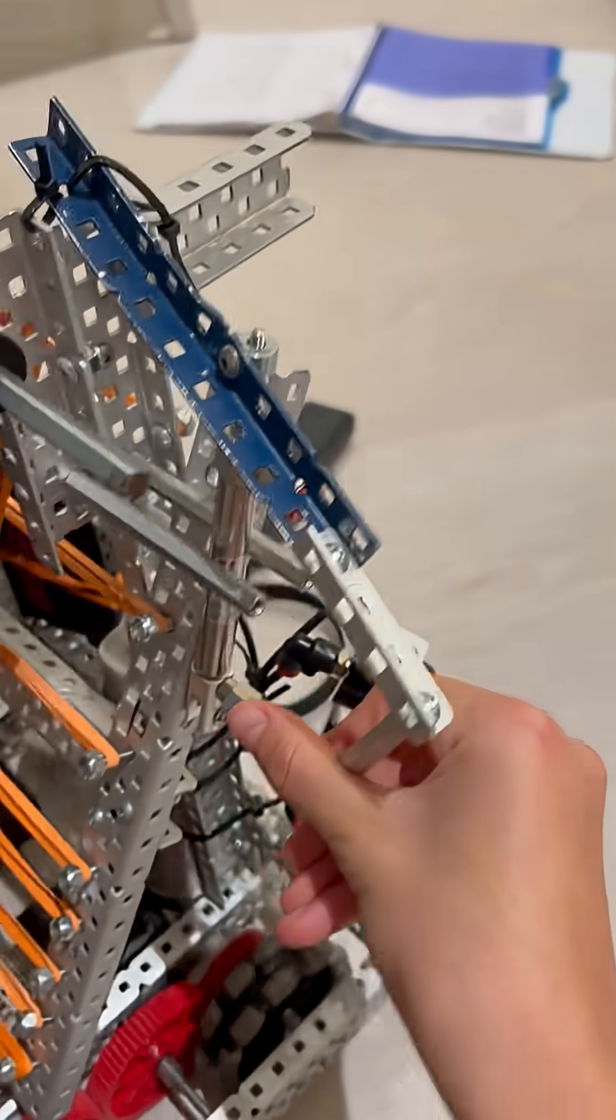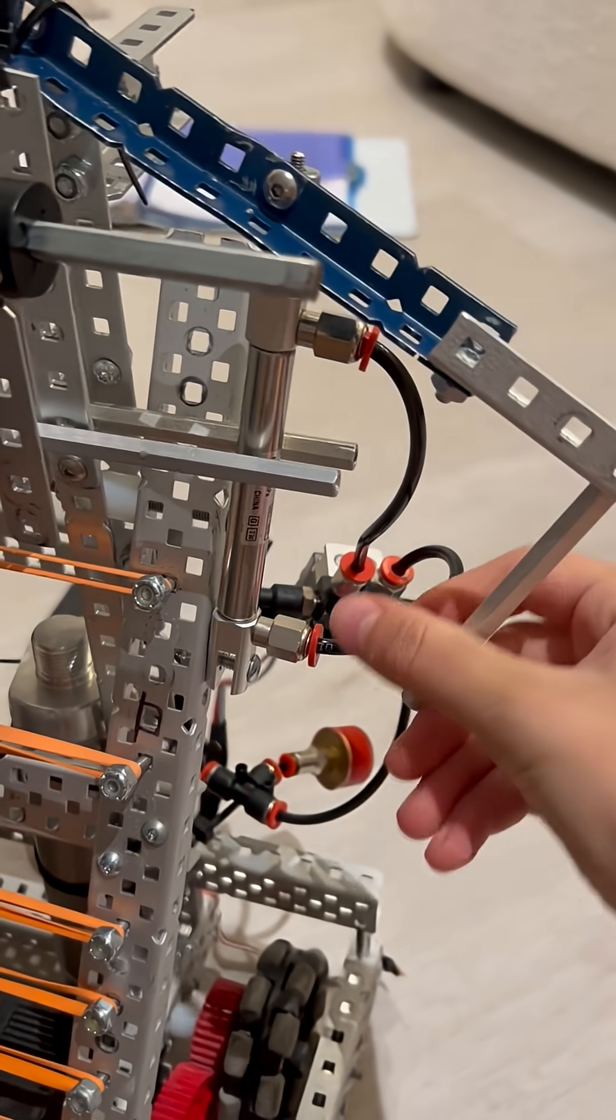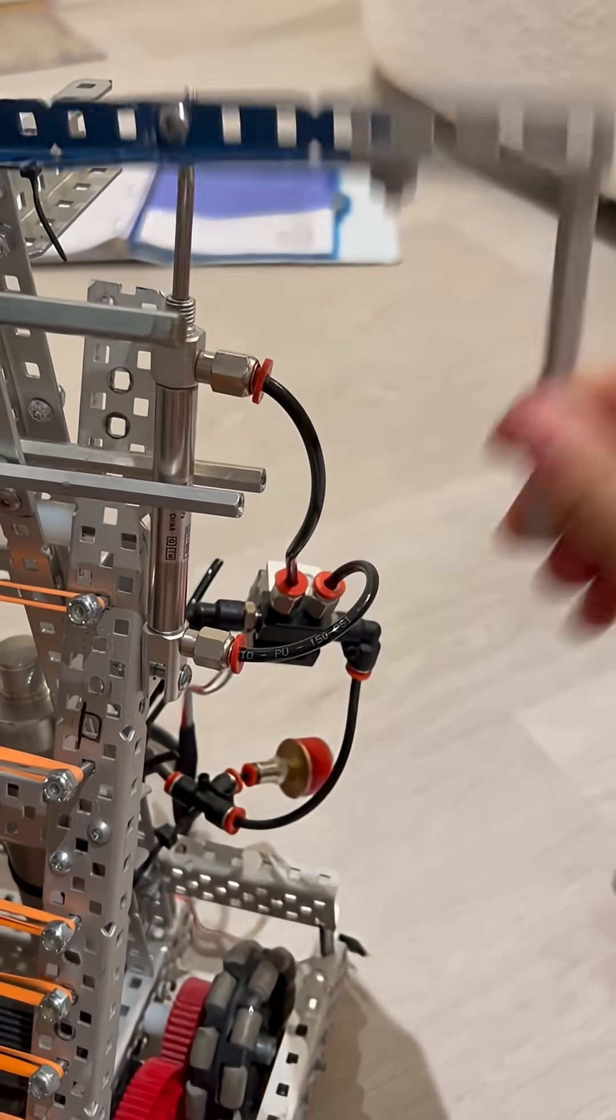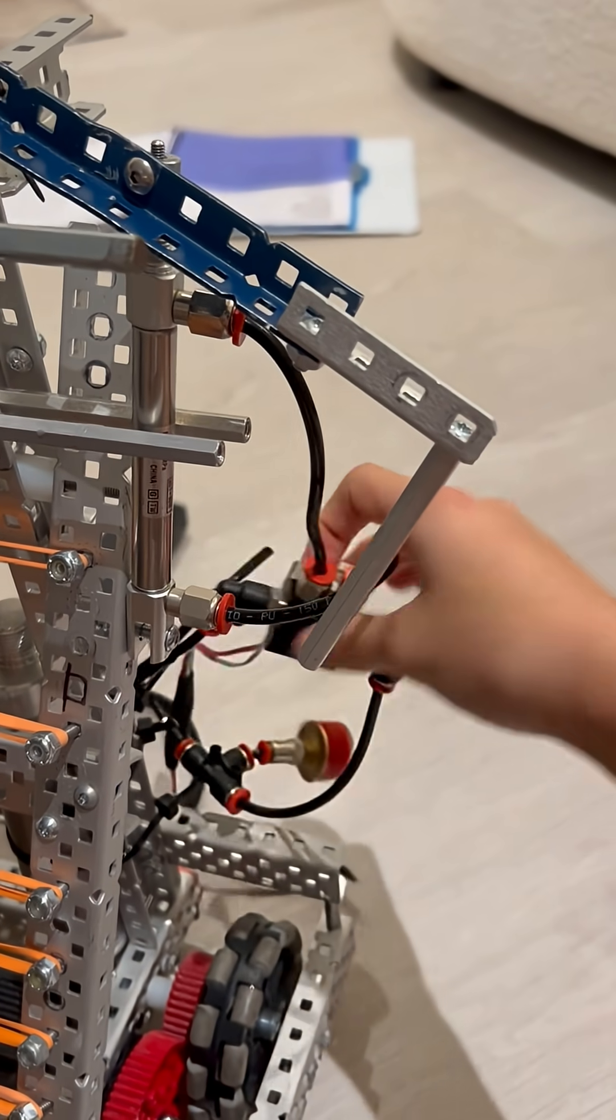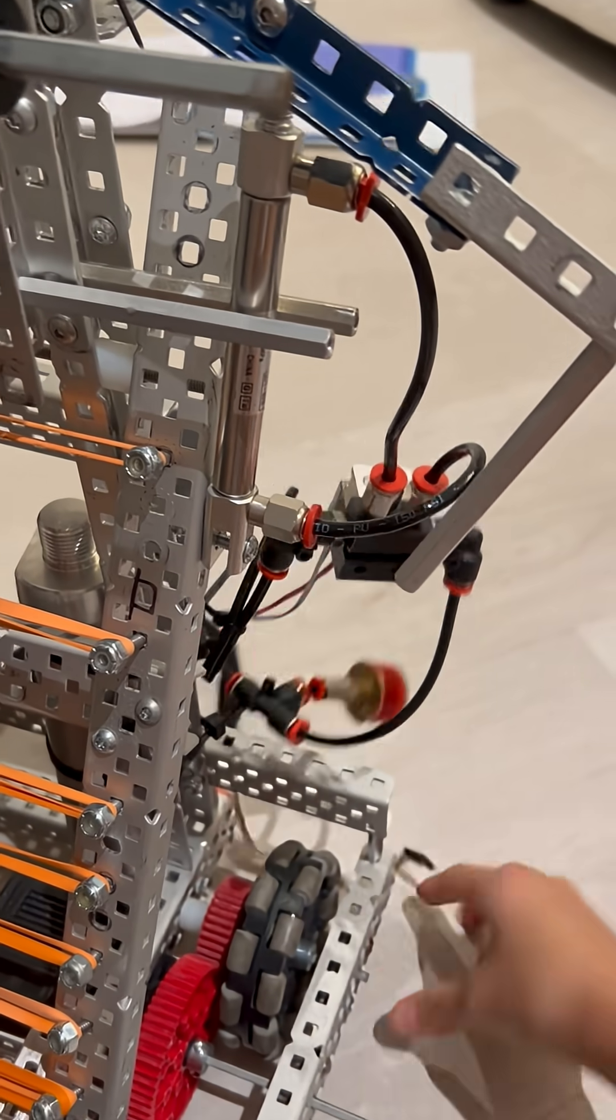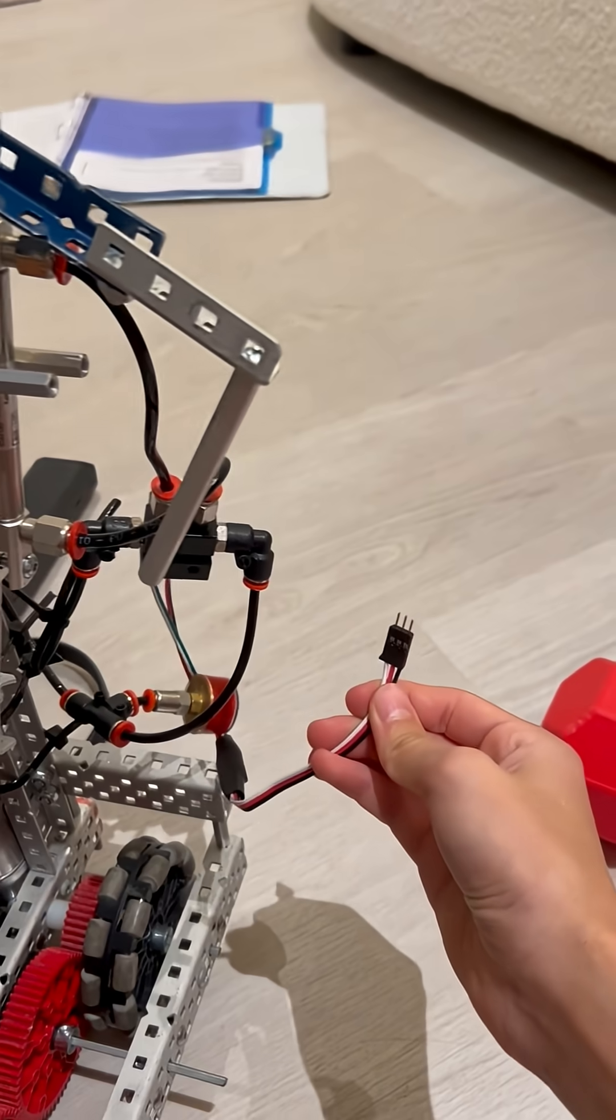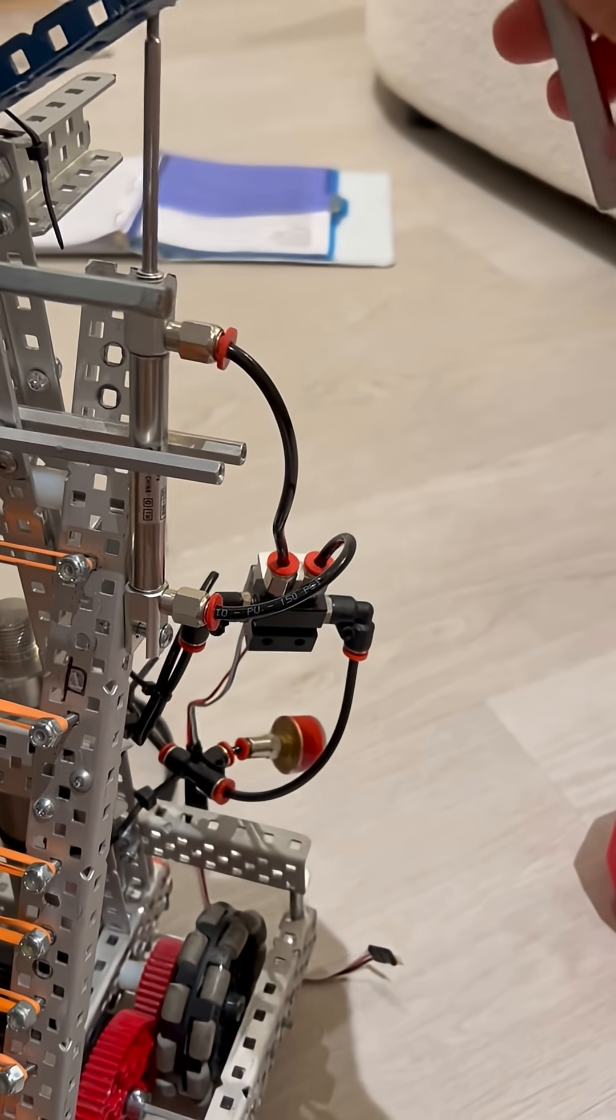The third and final step in building this hook is to connect the c-channel with the pneumatic piston. Once it's connected, you'll be able to move it up and down with the pneumatic piston, so hopefully your hook will be done.